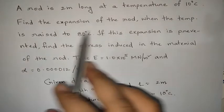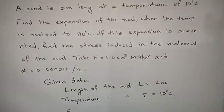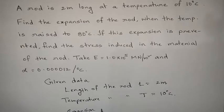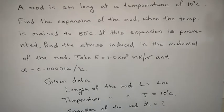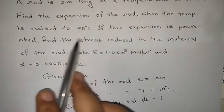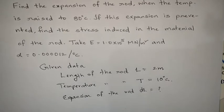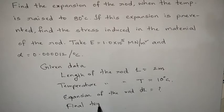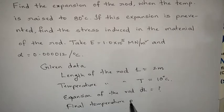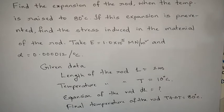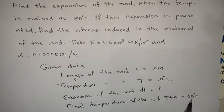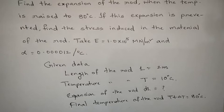What he asked: find the expansion of the rod. Expansion of the rod means change in length, so DL we need to find. That has to be found when the temperature rises to 80 degrees centigrade. So the final temperature T plus delta T equals 80 degrees centigrade. The increase in temperature is 80 minus 10, that is 70 degrees of temperature rise.